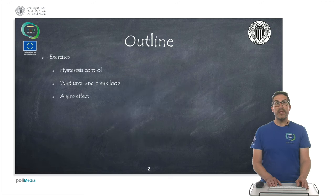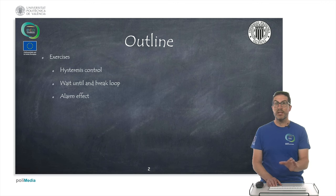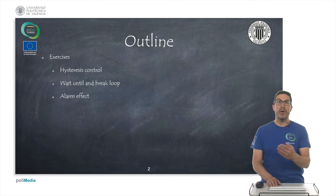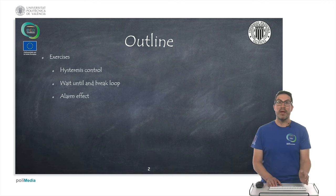This presentation is based on three exercises. The first one is hysteresis control, which is a classic example of temperature control. I will explain later. We will also have an exercise that waits until something happens, and if something happens during continuous execution of our code, then we want to exit from this loop and break it. And we're going to implement an alarm effect with the buzzer.